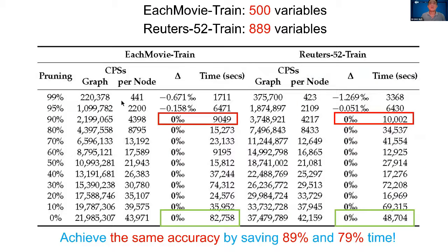On datasets with 500 to nearly 900 variables, we achieved the same accuracy and structure as the standard method while saving approximately 80 to 90% of computation time. This work has been published in the Journal of Entropy, and we are currently developing a parallel sampling algorithm. Thank you.